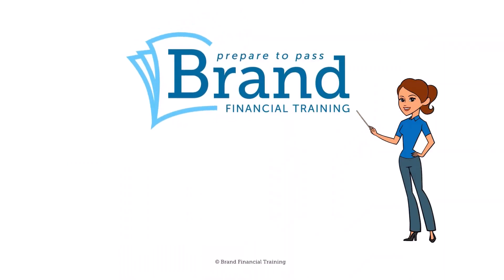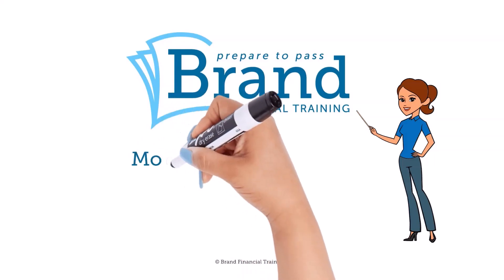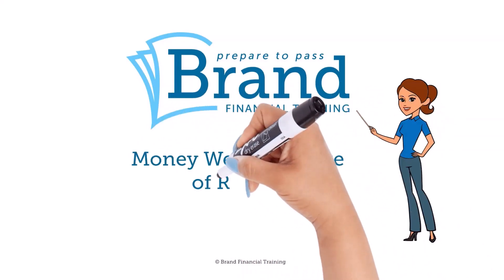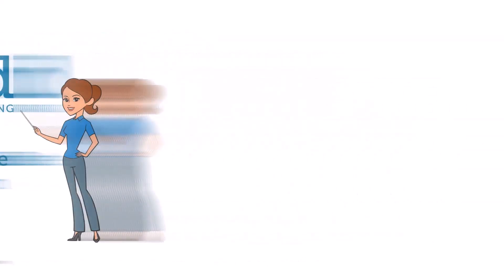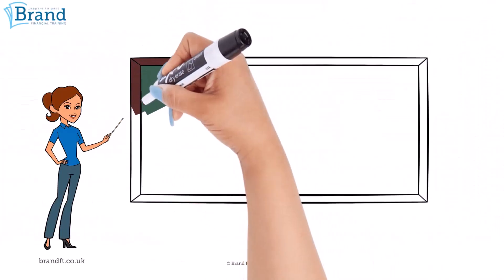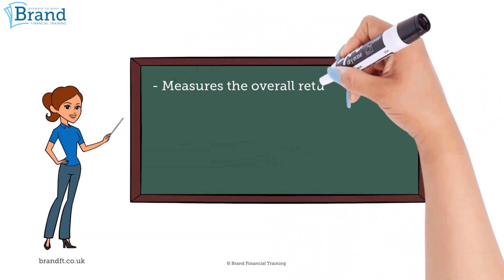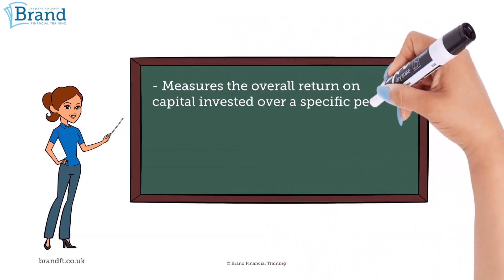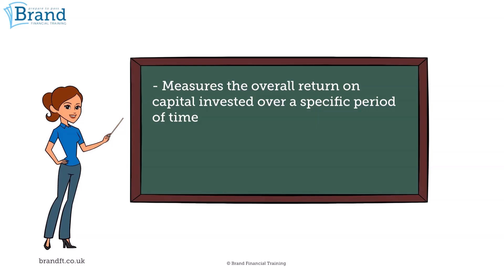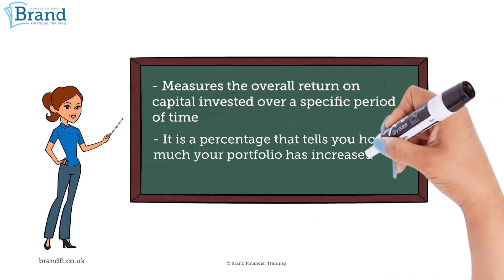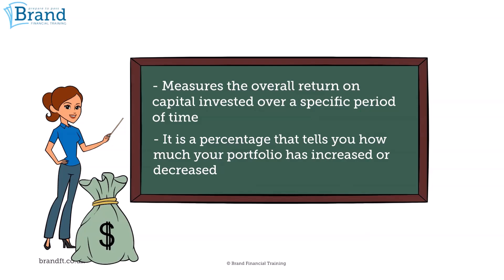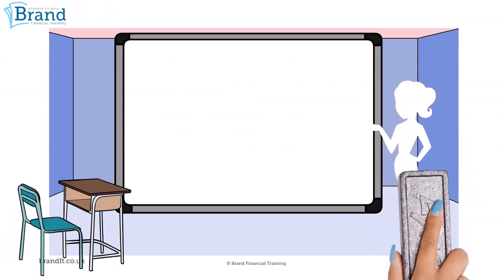Welcome to Brand Bite Size, brought to you by Brand Financial Training. Today we take a look at the money weighted rate of return. The money weighted rate of return, or MWR, measures the overall return on capital invested over a specific period of time. It is a percentage that tells you how much your portfolio has increased or decreased, by taking into account the timing and amount of cash that has been deposited or withdrawn.